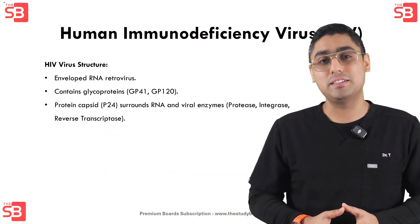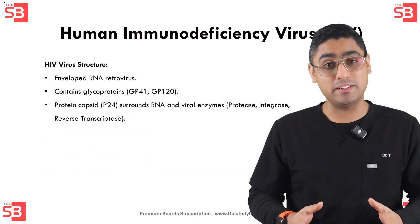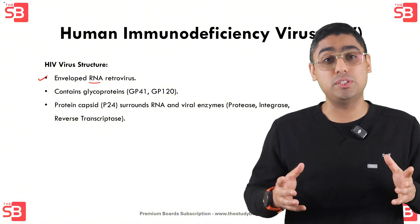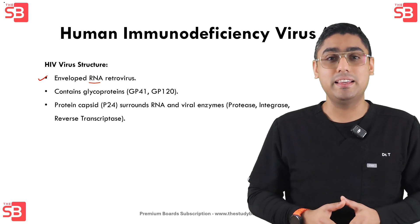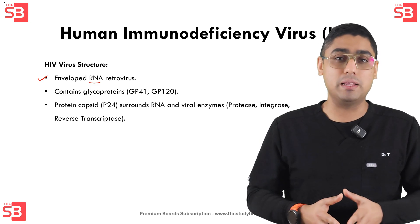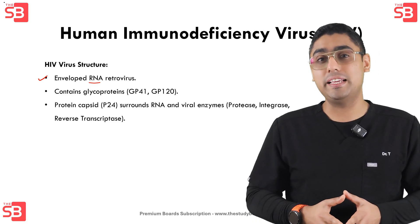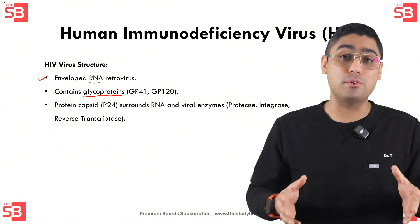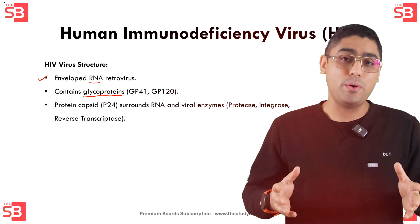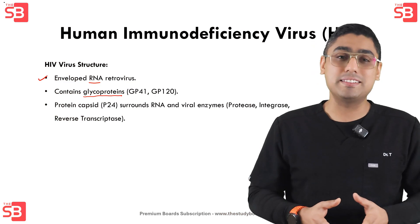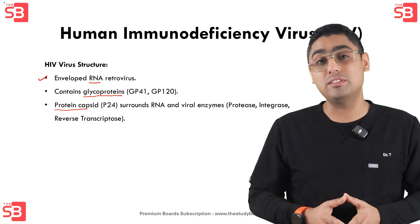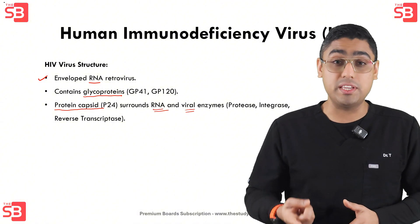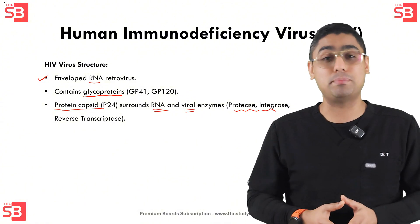Let's take a closer look at the structure of HIV virus. HIV is an enveloped RNA retrovirus, meaning its genetic material is RNA, and it has an outer envelope that contains glycoproteins that help the virus attach to CD4 receptors on the host cells. Inside the virus is a protein capsid that holds the viral RNA and some important enzymes like protease, integrase and reverse transcriptase.